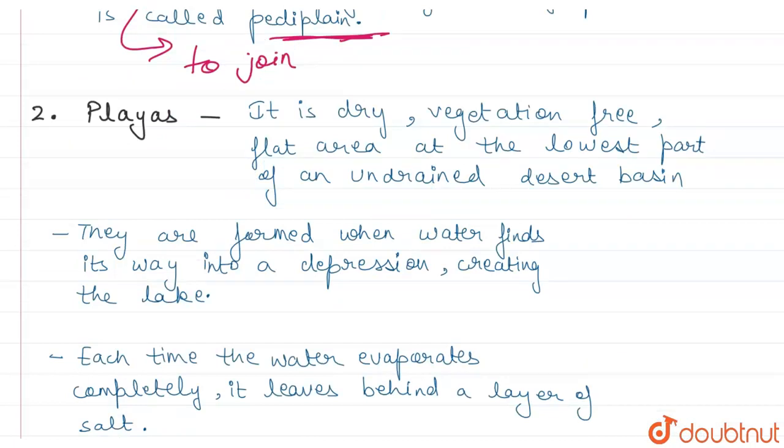Second, our landform is Playas. Playas is a dry, vegetation-free and flat area in desert, an undrained basin. The depression in desert areas shows a lake. When the water evaporates, it leaves layers of salt, and we have a formation of playas.